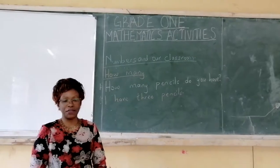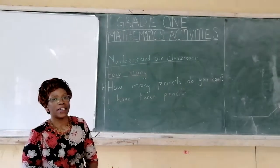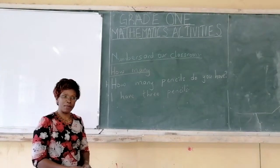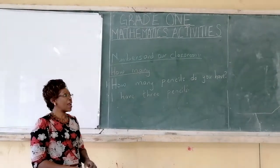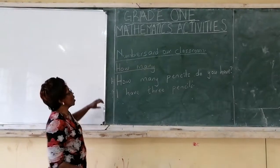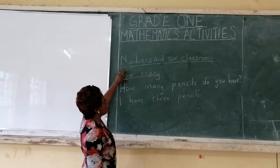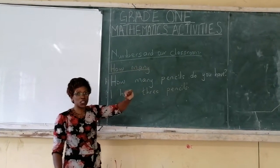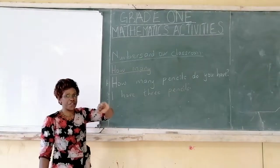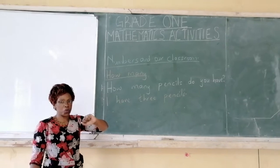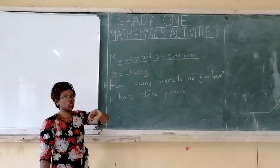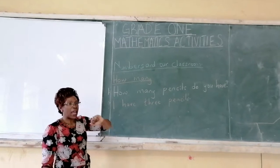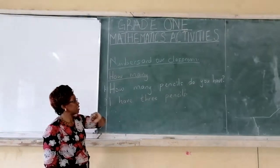I want us to do another activity. I want us to try and make sentences. The sentences you are going to make, we are going to use 'how many.' This word 'how many' is used to show the number of things. Remember we are learning how to count things. So we want to know how many things you have, and you are going to make a sentence for me.